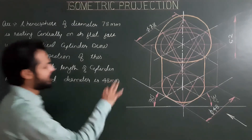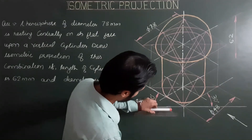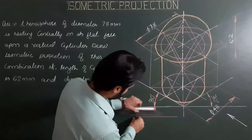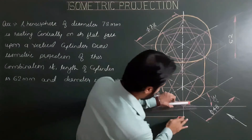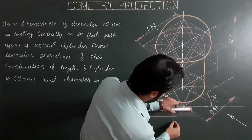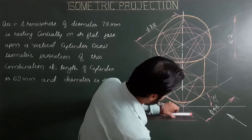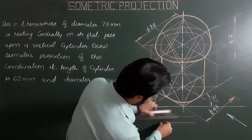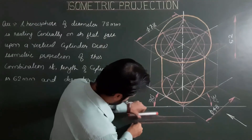Finally, naming — please write 'Isometric Projection' in single-stroke letter writing of size or letter height 8 or 10 mm or 5 mm, as per available space.